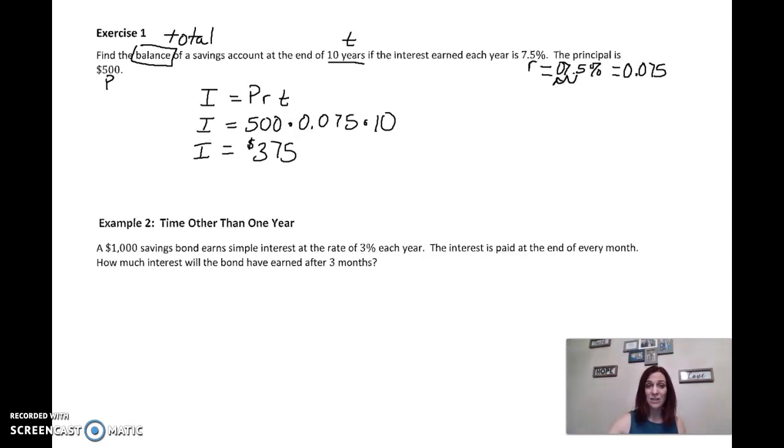Now, that doesn't answer the question being asked though. It asks us to find the balance. So our balance is going to be whatever our principal is, because remember that $500 is sitting there, and it's earning interest plus our interest. Principal plus interest gives us balance, the balance of the account. In this case, that's our answer, $875.